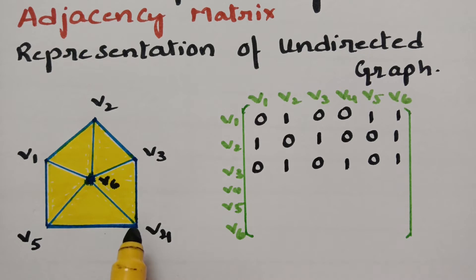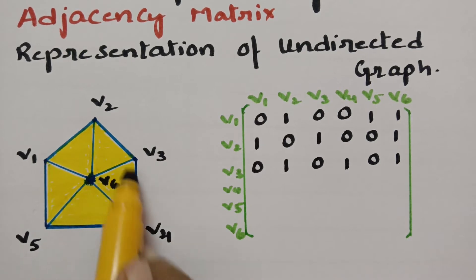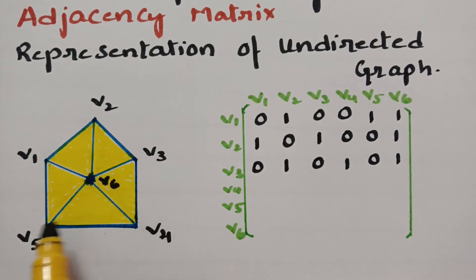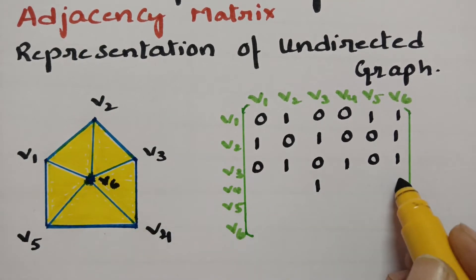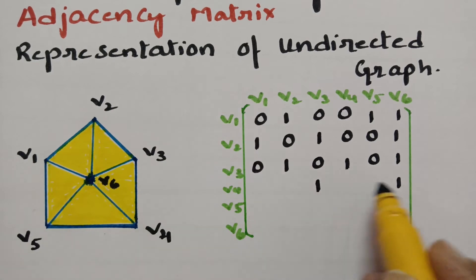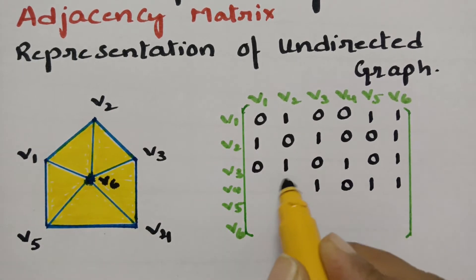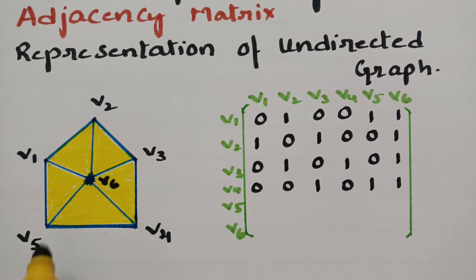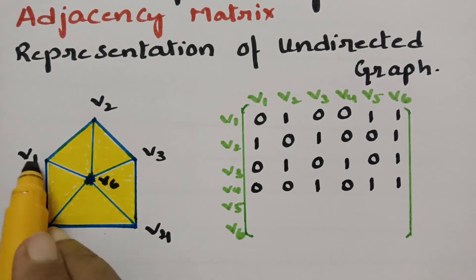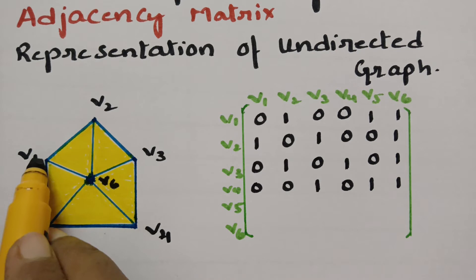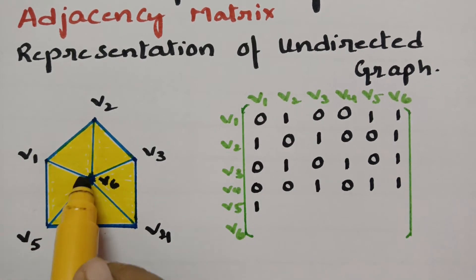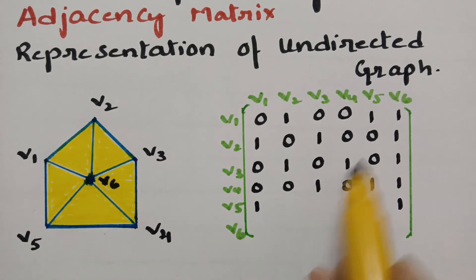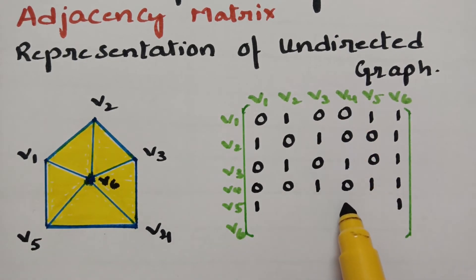Next coming to V4. V4 has three edges with V3, V6, and V5. So with V3 — 1 edge; V6 — 1 edge; and V5 — 1 edge; and the remaining are all zeros. Next coming to V5. V5 has three edges. So I keep 1 with V1, next V6 gets a 1, and next V4 gets a 1. Remaining are all zeros.